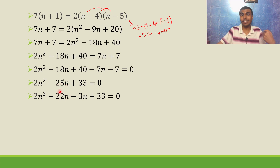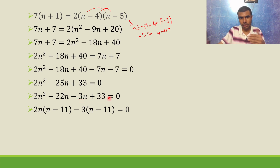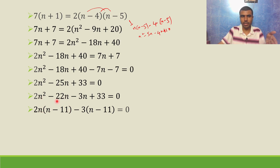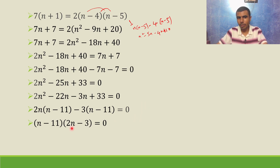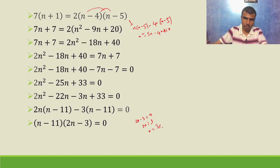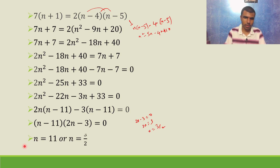Taking 2n common from the first two terms gives 2n(n-11), and taking minus 3 common from the last two gives minus 3(n-11). Now taking (n-11) common: (n-11)(2n-3) equals 0. Case 1: n minus 11 equals 0, so n equals 11. Case 2: 2n minus 3 equals 0, so n equals 3/2. But n cannot be a fraction, so n equals 11.